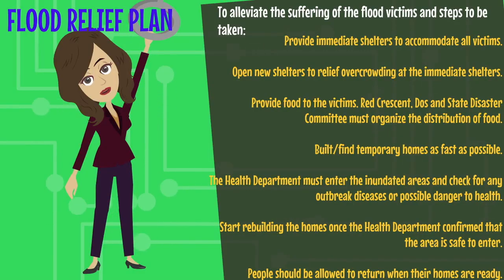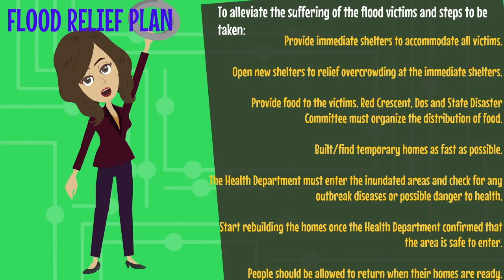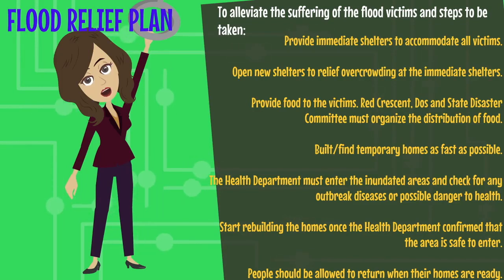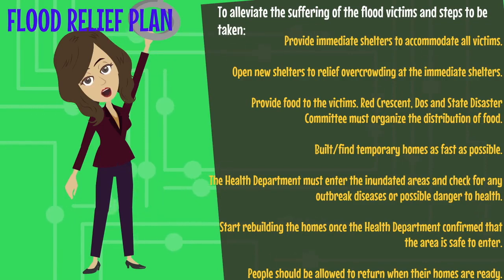The flood relief plan is important to alleviate the suffering of flood victims. Steps include: firstly, providing immediate shelters to accommodate all victims and opening new shelters to relieve overcrowding if necessary; secondly, providing food to the victims; next, building or finding temporary homes as fast as possible. The health department must enter the inundated areas and check for outbreak diseases or possible danger to health. Lastly, start rebuilding homes once the health department confirms the area is safe to enter.